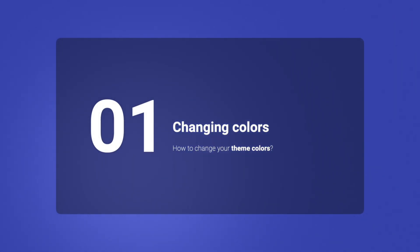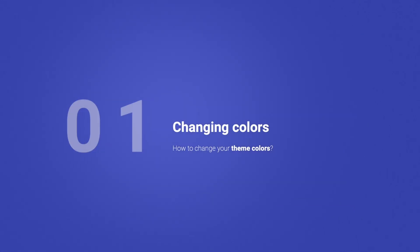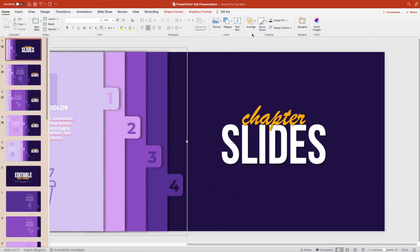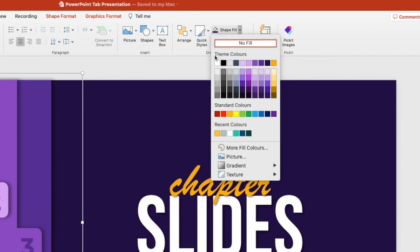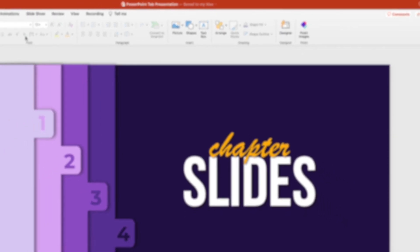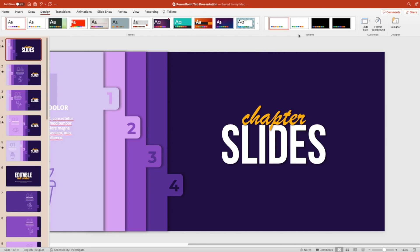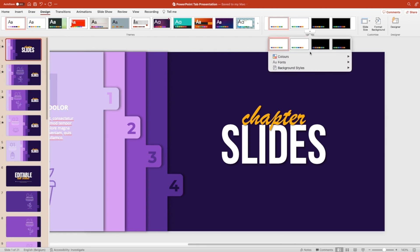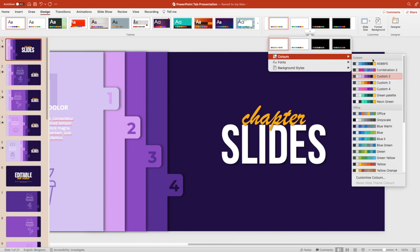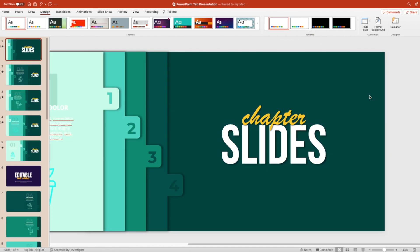Changing colors — how to change the theme colors. In PowerPoint, when you select a color, you have an overview of different colors. You go to the Design tab on the top left, then on the right you'll see Variants, and if you click that drop-down menu, you get the option to choose different color palettes. If you go to green, this instantly changes your entire presentation, depending on the colors that you've set up.